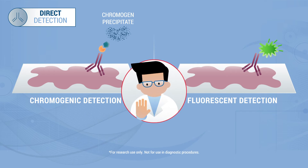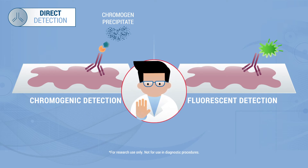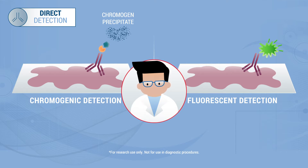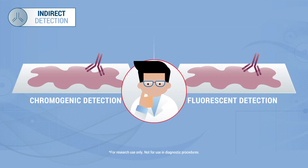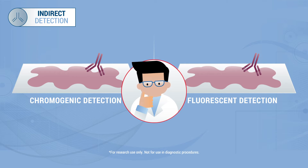However, this type of assay may provide constraints due to the availability of pre-labeled primary antibodies and lower expressed proteins. Indirect detection systems may be more beneficial to overcome these assay issues.